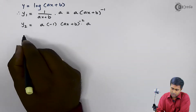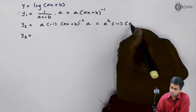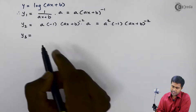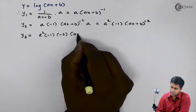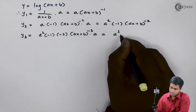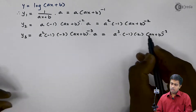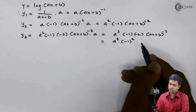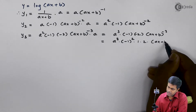Next, y3. Before finding y3, we will rewrite y2 as a squared into minus 1 into (ax plus b) raised to minus 2. Now let us find out y3 from y2: a squared as it is, minus 1 as it is since it is a constant. The derivative gives minus 2 into (ax plus b) raised to minus 3 into a. So this term becomes a cubed into minus 1 into minus 2 into (ax plus b) raised to minus 3. We rewrite this in a standard format: a cubed into (minus 1) squared, because we are getting a minus sign 2 times, into 1 into 2 into (ax plus b) raised to minus 3.